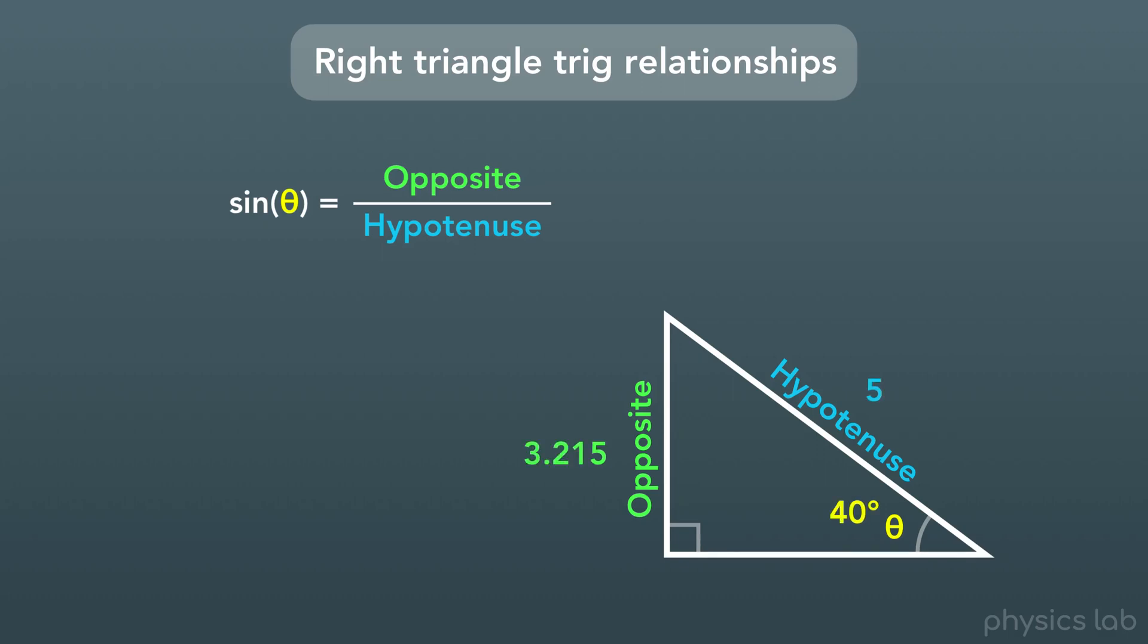Well, let's say that we're given that theta is equal to 40 degrees, and we're given the length of these two sides. The opposite side is 3.215, and the hypotenuse is 5.